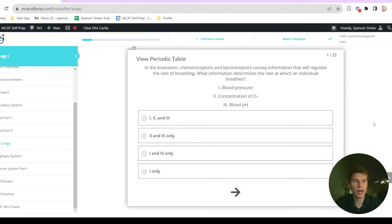Now that we understand a little bit about how our breathing is regulated, let's try and answer this question. Which of these is going to determine the rate at which we breathe? Well, blood pressure, we know, is going to regulate breathing because if we have higher blood pressure, we need to breathe more. The concentration of oxygen, it's pretty obvious that if we need more oxygen, we need to breathe more.